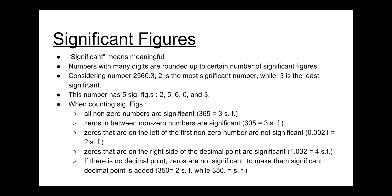Zeros that are on the right side of the decimal point are significant. So, 2.032 has four significant figures because 0 is significant in this case.